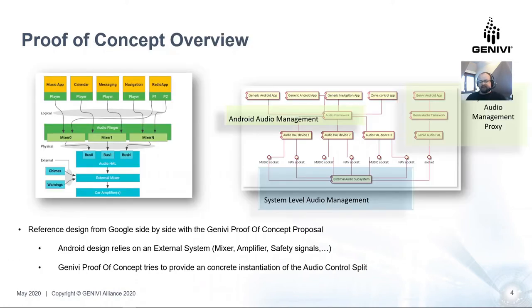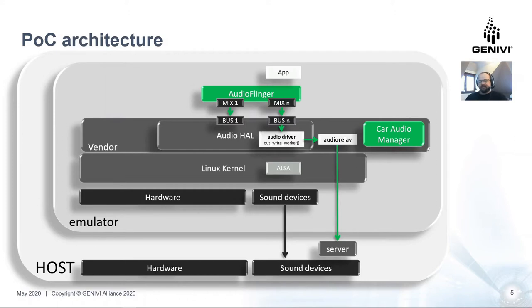When we were thinking about the possible architecture of this proof of concept, we were also basing on what Google is actually suggesting — that some parts of the system should be handled outside of Android, like chimes, warnings, and all those critical sounds that should be handled separately from Android and mixed outside. In order to achieve this, we would first like to get just the raw PCM stream from Android without any effects, without any modifications, without any additional features — just a pure PCM stream — in order to properly handle it outside of the Android system and to get the possibility to control the routing on the whole platform. On this slide you can see the more detailed architecture.